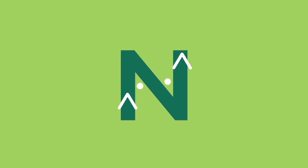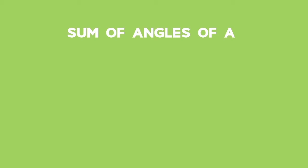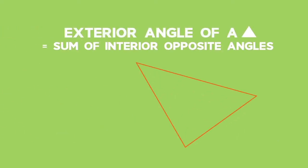Triangles. Sum of the angles of a triangle is 180 degrees. The exterior angle of a triangle is equal to the sum of the two interior opposite angles.